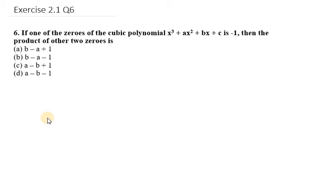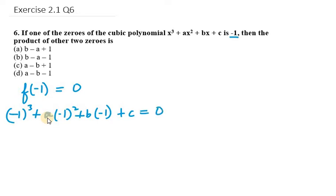So in this case we are given that one zero is minus 1. What we need to do is take f(-1) and it must equal 0. So I will be putting the value of x as minus 1 into the polynomial. So it will be (-1)³ + a(-1)² + b(-1) + c = 0.